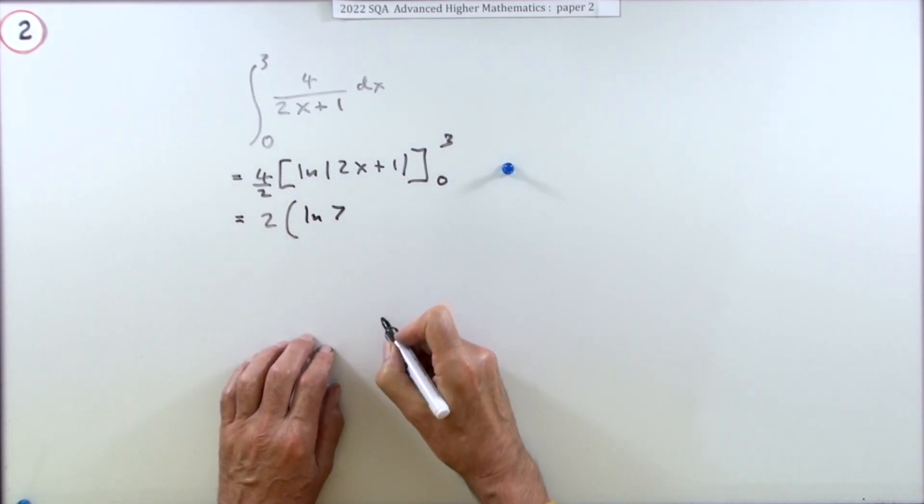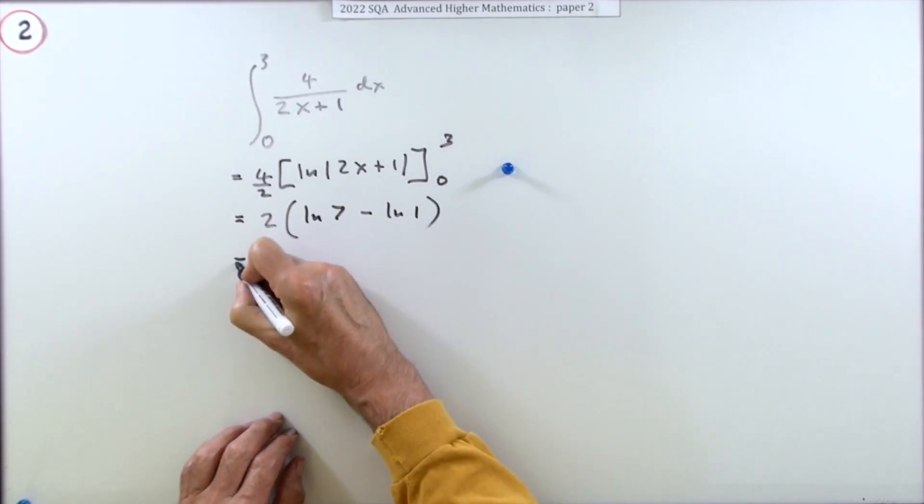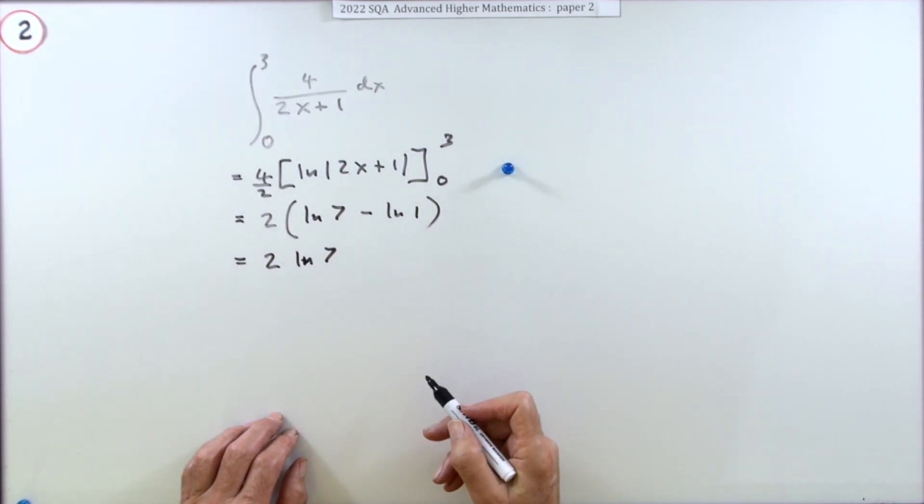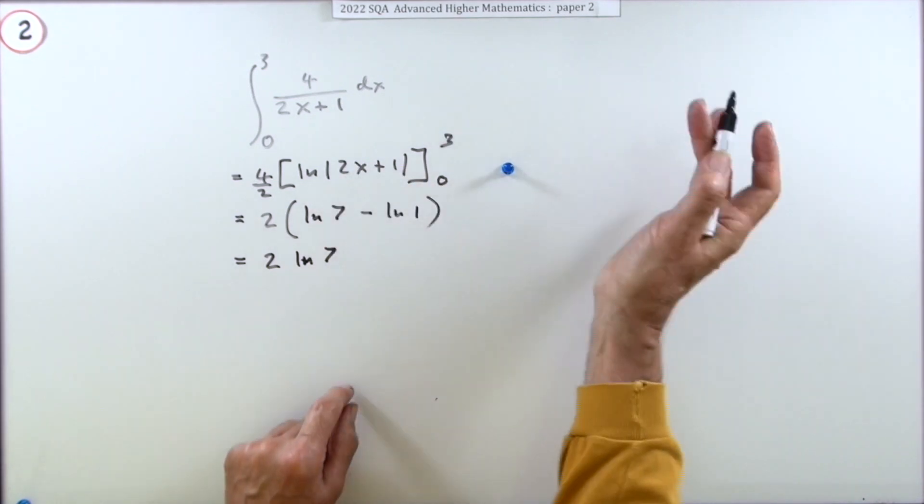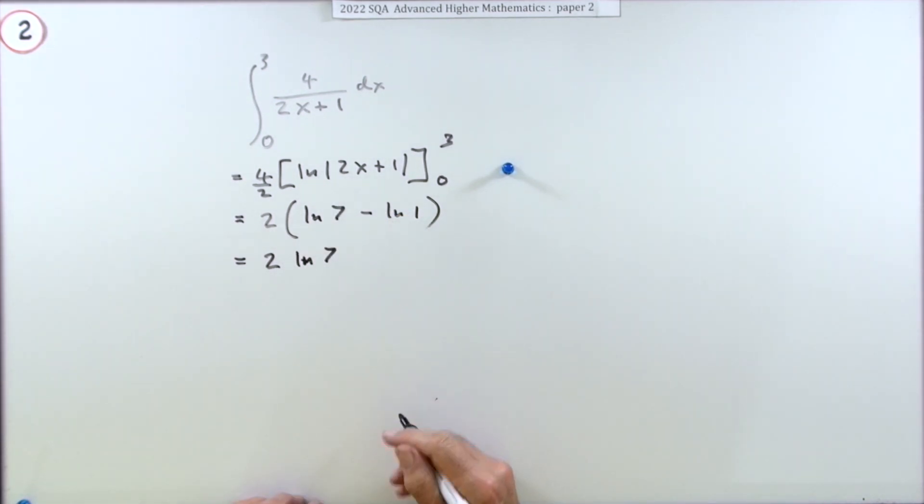Minus, and when it's zero it's one, minus log one. Now either way around that just comes to two log seven. I say either way around because you can either think well the log of one is zero so that bit disappears, or you could think if you've got the difference in logs that would be the log of the quotient - log of seven divided by one which is seven.